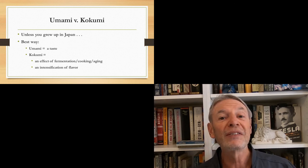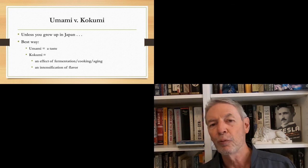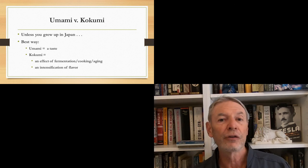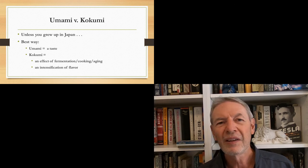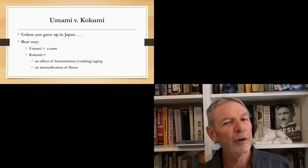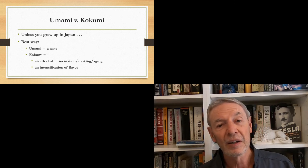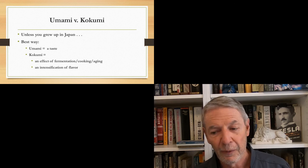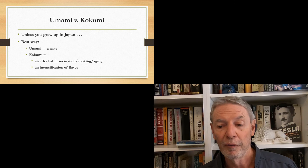So, I think the best way to understand the difference is to think of umami as a taste, and to think of kokumi as an effect, an effect of fermentation, or cooking, or aging. Think of kokumi as an intensification of flavor. So, it's not like saying, when you say, I taste umami, you could be saying, I taste salt, or I taste sourness, or I taste bitterness. But when we talk about kokumi, it's kind of more analogous to saying, this is hot, or this is cold. It's different from identifying a taste. It's more of an identification of an effect. Which is, and that effect is the intensification of flavor.